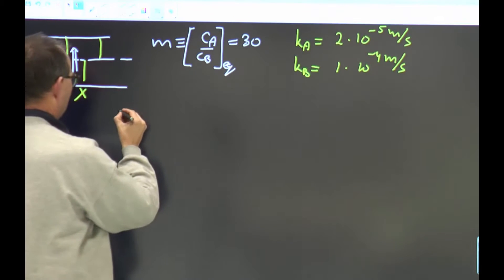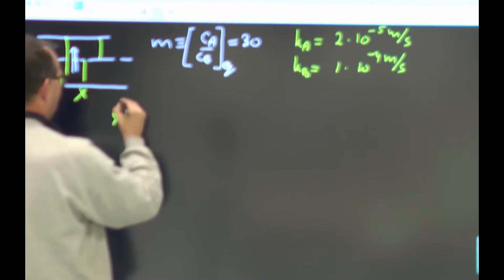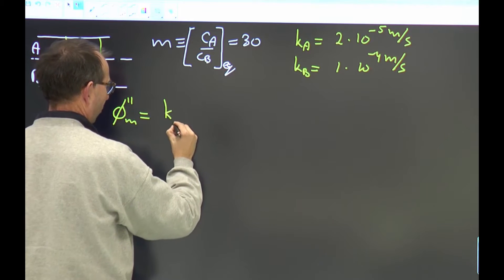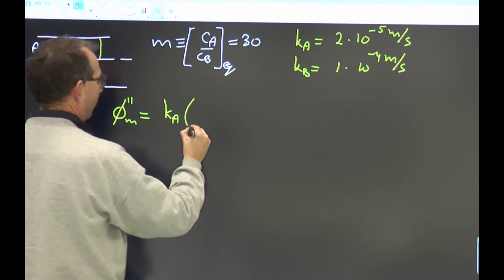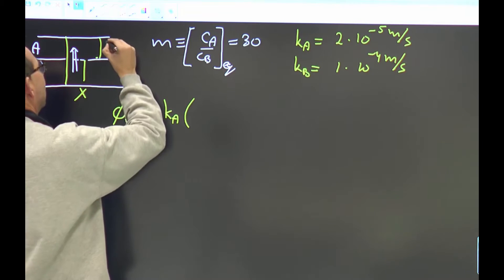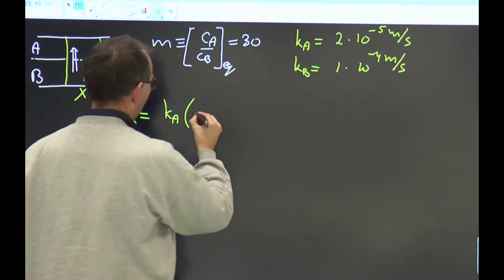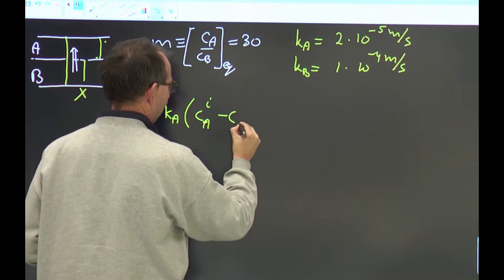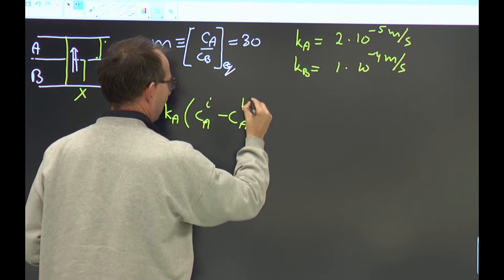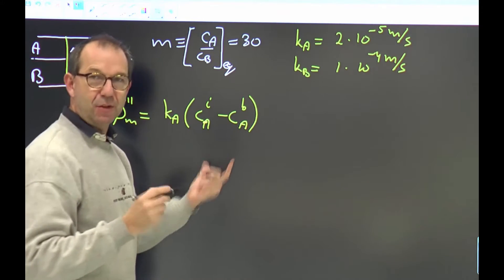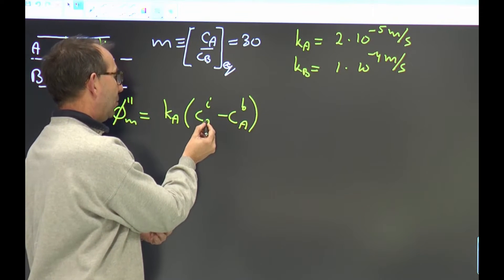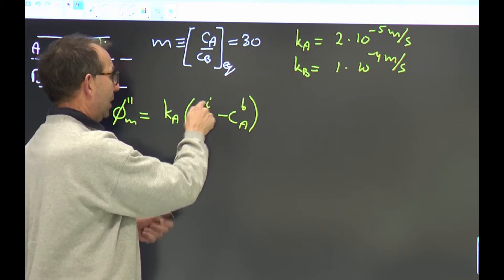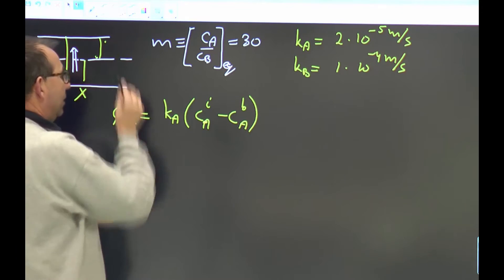To do so we need to write down the expressions for the mass crossing the interface, φ double M, which is on the A side given by the transfer coefficient kA times the driving force on the A side, which is the value at the interface minus the value in the bulk. And I don't know what they are, but I can give them their names. The driving force in A is nothing spectacular—it's the interface concentration minus the bulk concentration. From the previous example we know that the transfer is from B to A.